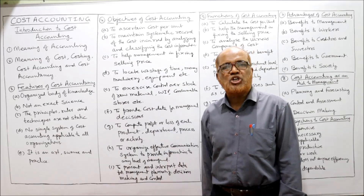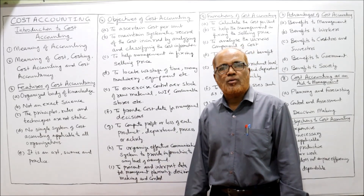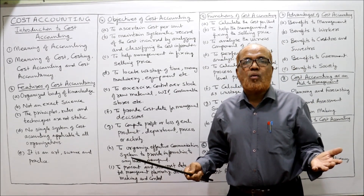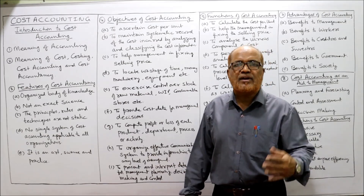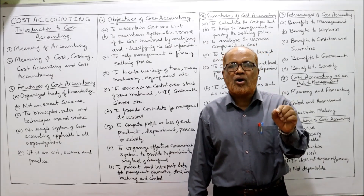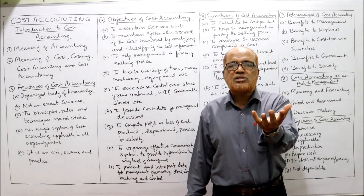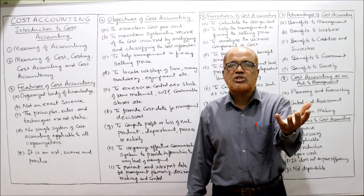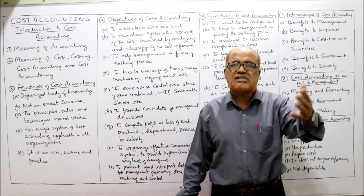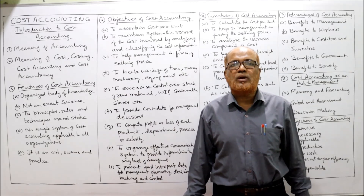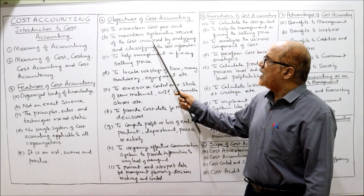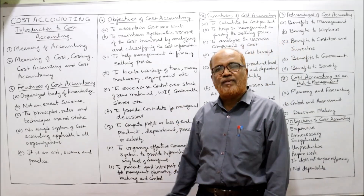The next topic is objectives of cost accounting — why this subject is required, its purpose and significance. First, to ascertain the cost per unit: every organization wants to find out what is the cost per unit of goods produced or services provided. Second, to maintain systematic records of cost incurred by analyzing and classifying cost information.